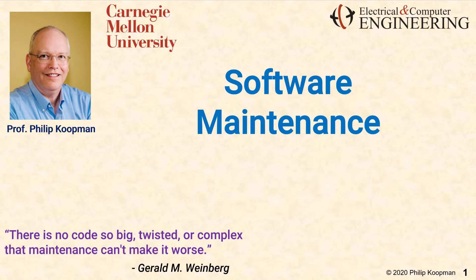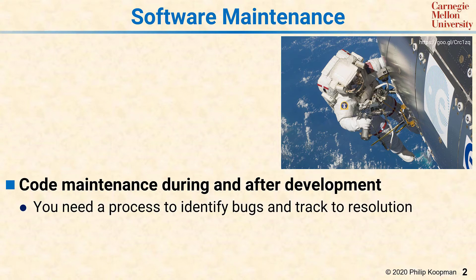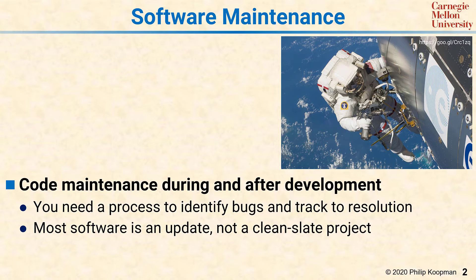This is Phil Kopman with a tutorial on embedded software maintenance. Software maintenance has to do with all the stuff that happens after you think the code is working. Traditionally, it has to do with what happens after you ship the code. Once you ship the code, you need a process to identify bugs and track those bugs to resolution. But it turns out all those bugs aren't necessarily bugs — many of them are feature requests. So software maintenance usually really has to do with figuring out how to modify and update the software.